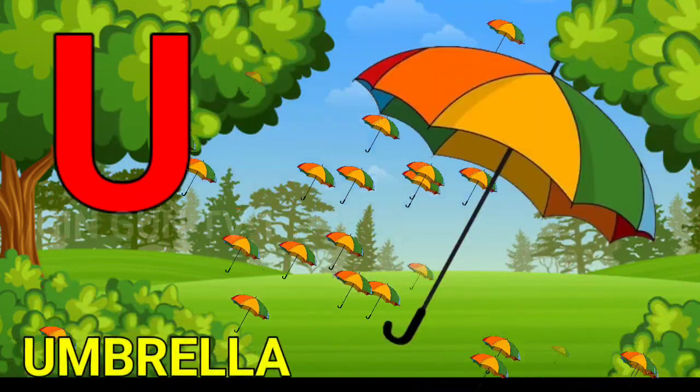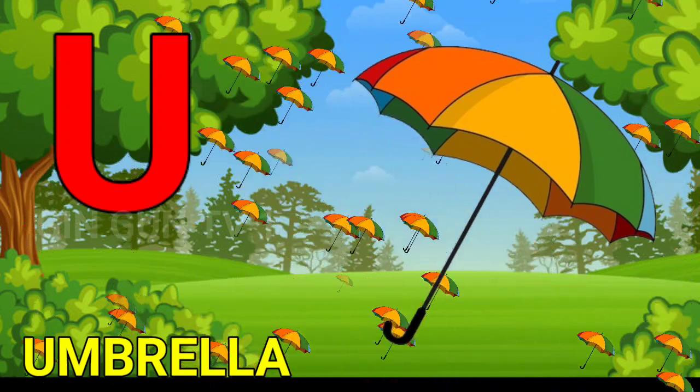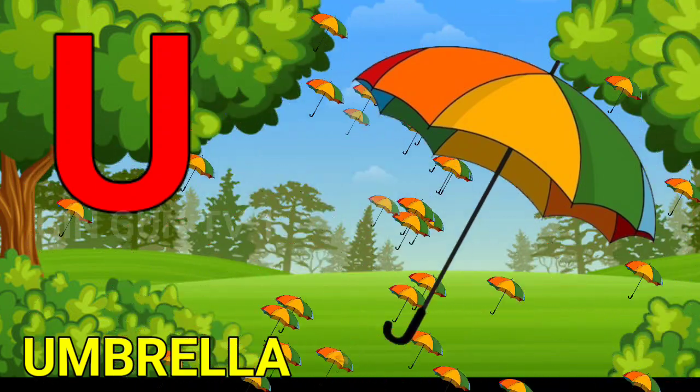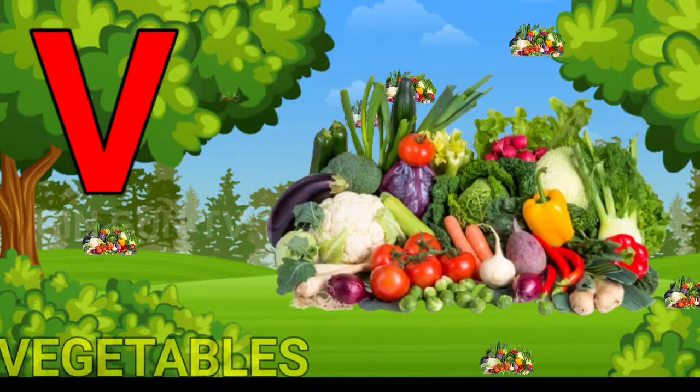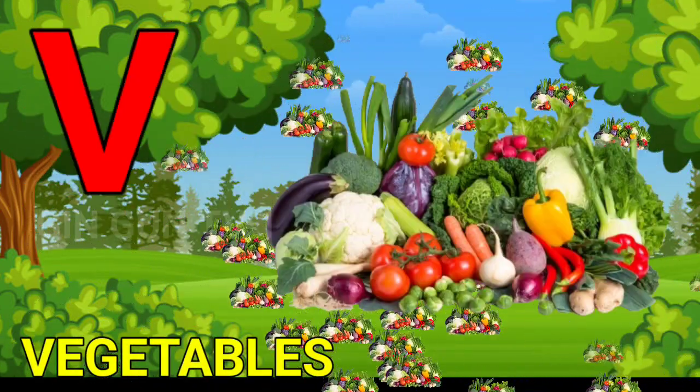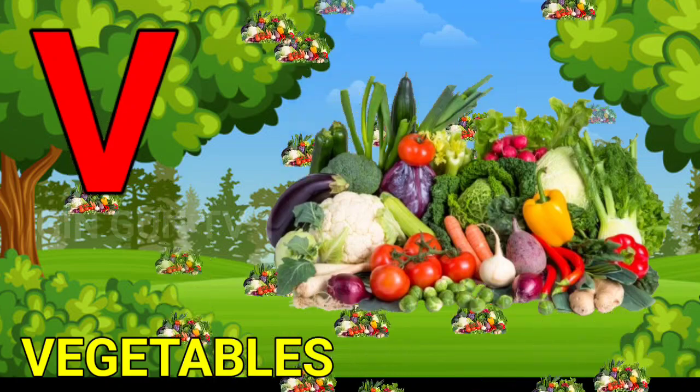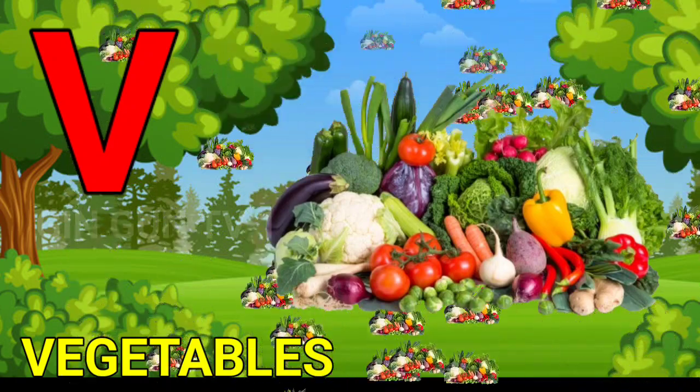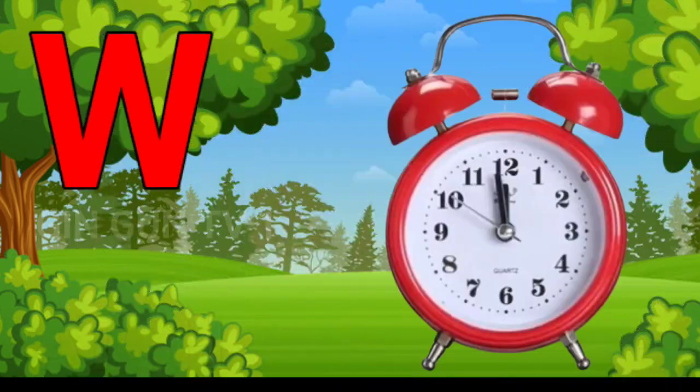U for Umbrella, Umbrella means Chata. V for Vegetables, Vegetables means Sabitia.